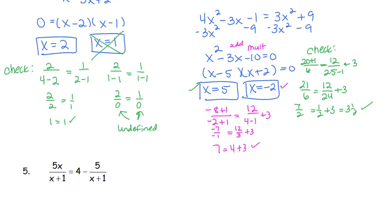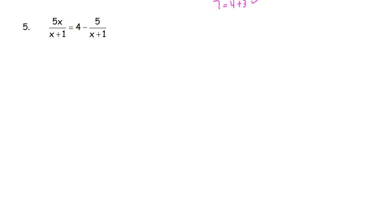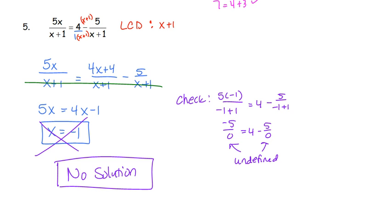We have one more problem — number 5. I want you to press pause and try it on your own. If you did this correctly, there's a chance you may have thought you were doing it wrong because the answer is no solution. Number 5 has three pieces — two on the right — so we use the LCD method. The LCD is x plus 1. The only piece without that denominator is the 4, so we multiply top and bottom of that fraction by x plus 1. After crossing out the denominator, we move the 4 over and get x equals negative 1. Checking negative 1 gives two undefined pieces, so there is no solution.